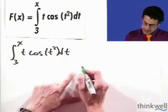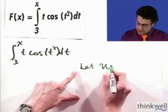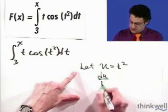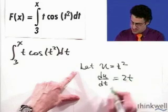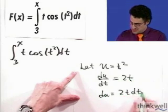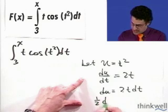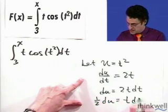So let's let u equal t squared. So if I take the derivative, I see du dt equals 2t. And so du equals 2t dt. And I want t dt. And so if I divide both sides by 2, I see 1 half du equals t dt.